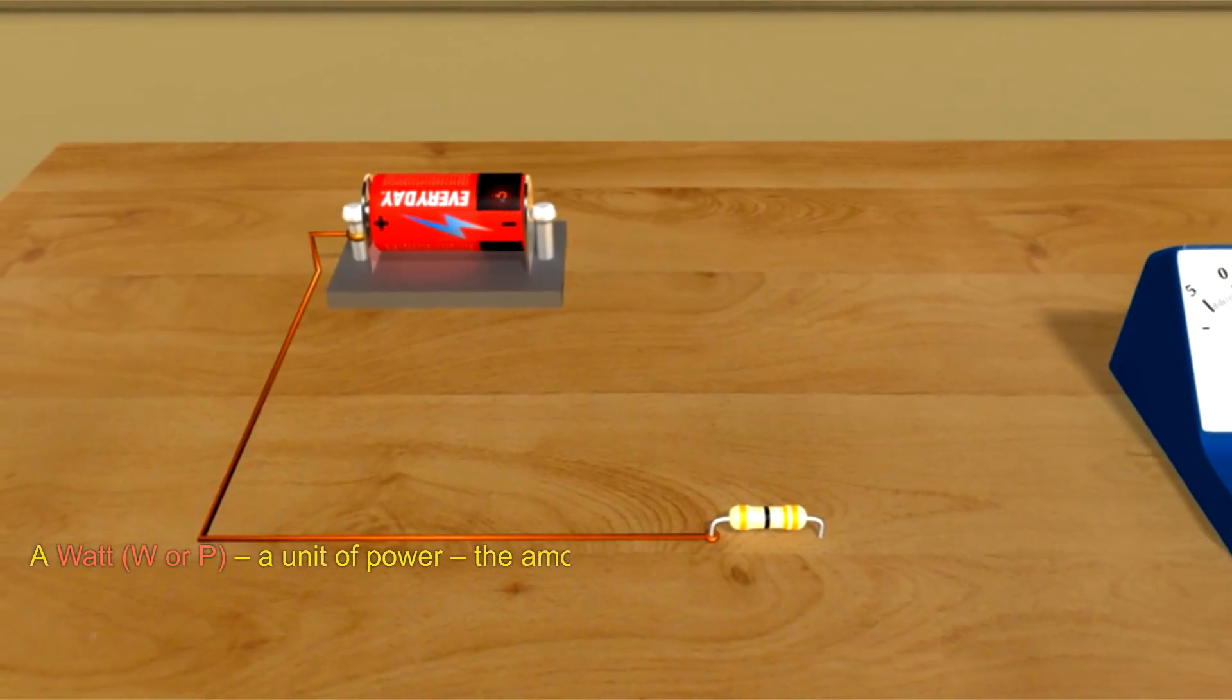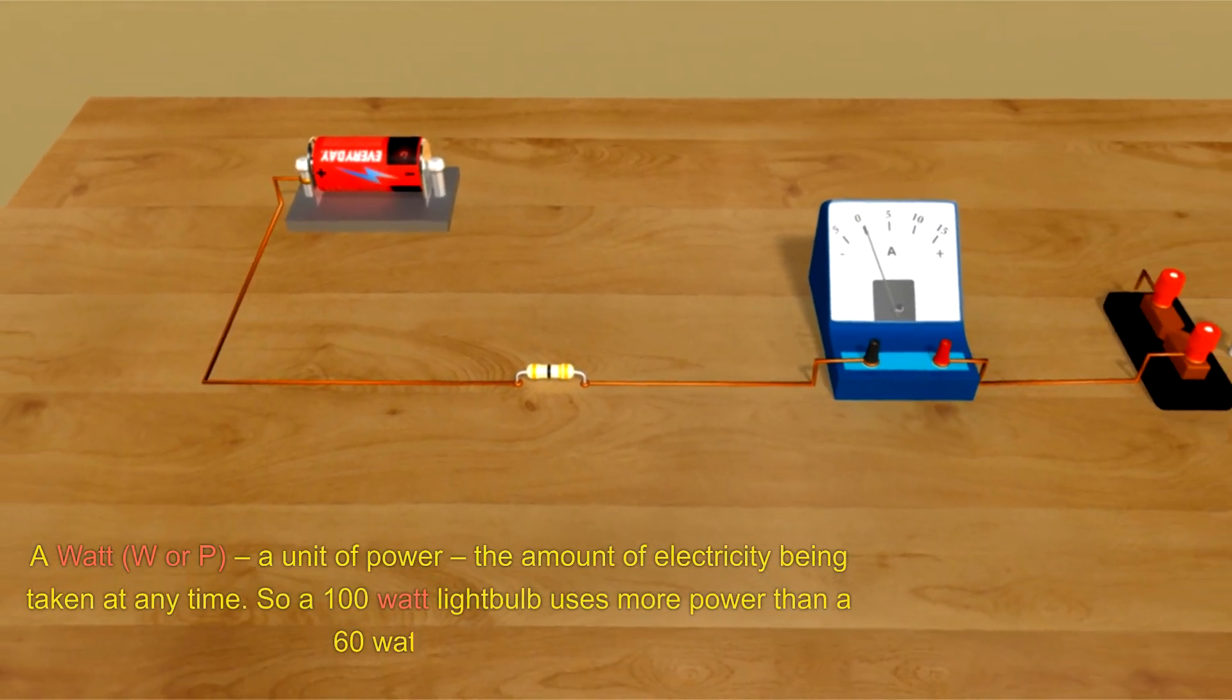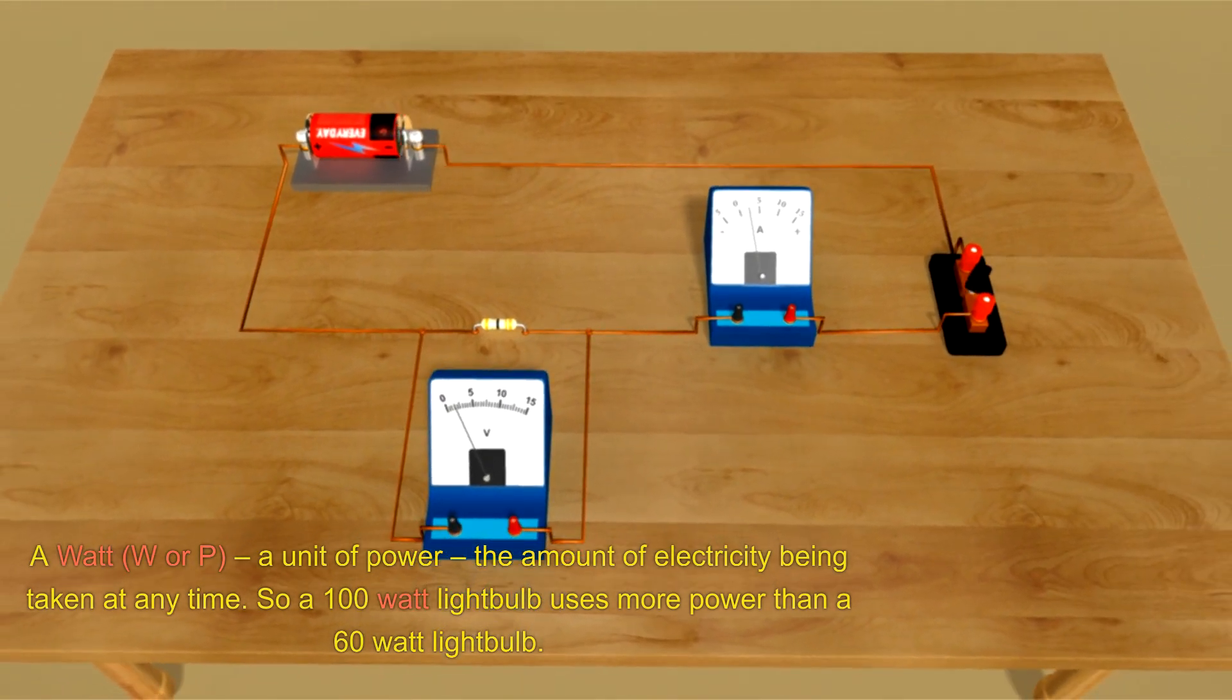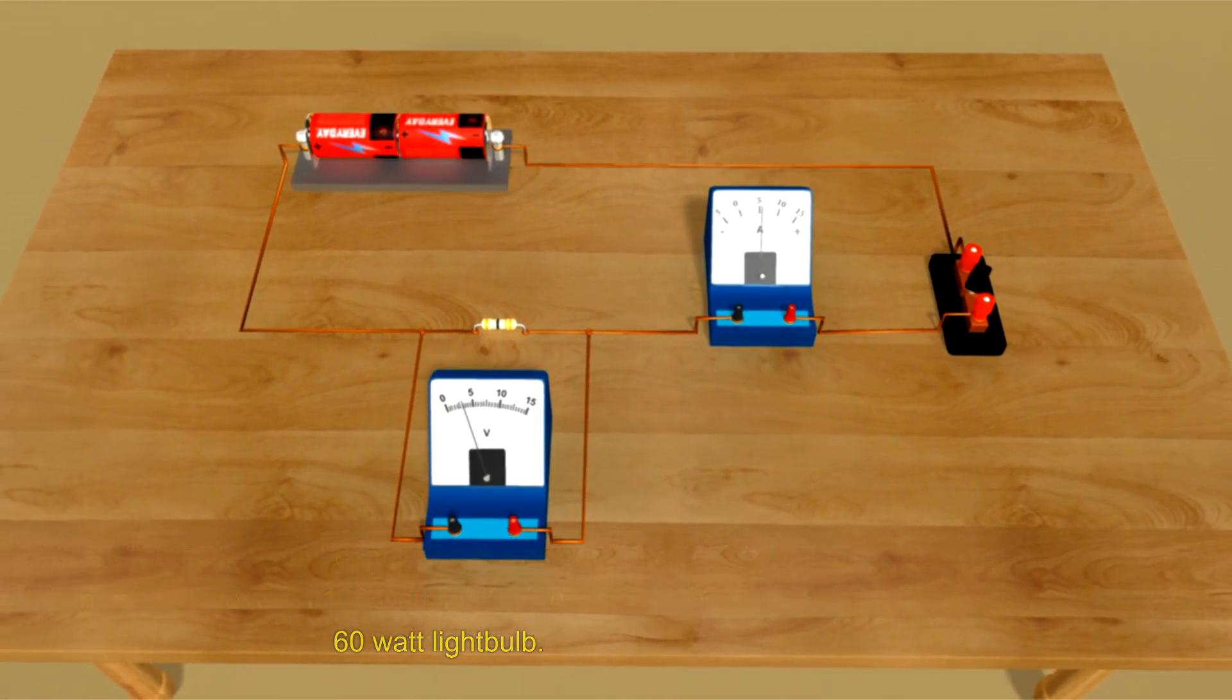A watt (W or P), a unit of power, the amount of electricity being taken at any time. So a 100-watt light bulb uses more power than a 60-watt light bulb.